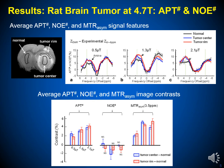We applied the EMR method to rat tumor models. The quantitative measured APT and NOE signals were compared at three RF saturation powers. The first key result is that APT# signals of the tumor center and tumor rim were significantly higher than that of normal tissue across all RF power levels. Second, the RF power dependency of APT# and NOE# signals can be seen clearly: APT# signals were smaller than NOE# signals at low RF power, but became significantly larger than NOE# signals at high RF saturation powers for the tumor center and tumor rim.